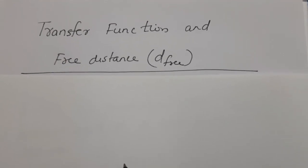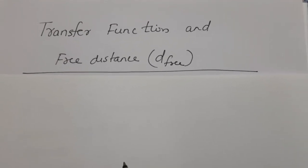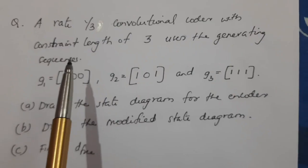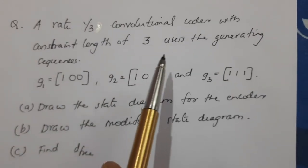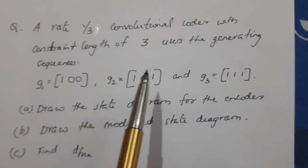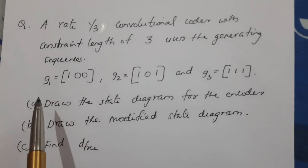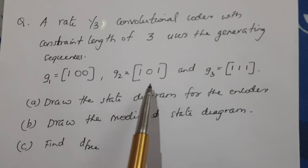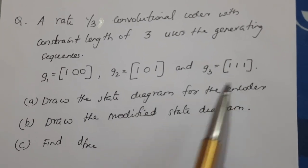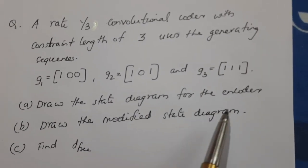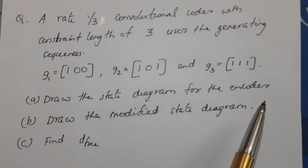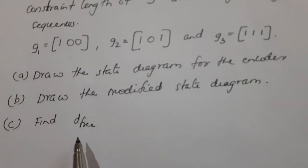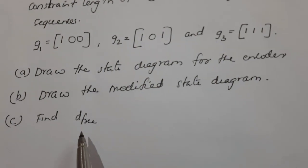The transfer function and finding the free distance can be demonstrated with the help of a particular problem. A rate 1/3 convolutional encoder with constraint length of 3 uses generator sequences g1 equal to 100, g2 equal to 101, and g3 equal to 111. We need to draw the state diagram, draw the modified state diagram, and finally find the free distance, d_free.